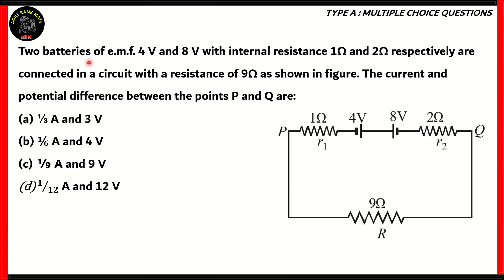Two batteries of EMF 4V and 8V with internal resistance 1 ohm and 2 ohms respectively are connected in a circuit where the resistance of 9 ohms is shown in the figure. The current and potential difference between the points P and Q are: (A) 1/3 amperes and 3 volts, (B) 1/6 amperes and 4 volts, (C) 1/9 amperes and 9 volts, (D) 1/12 amperes and 12 volts.